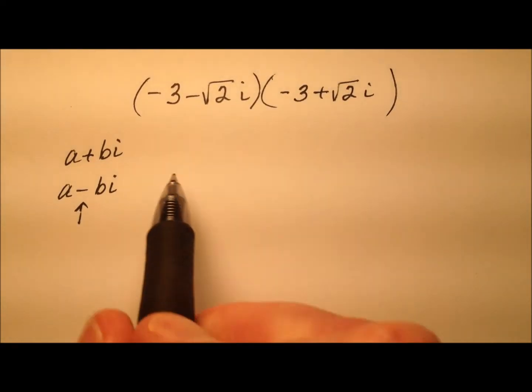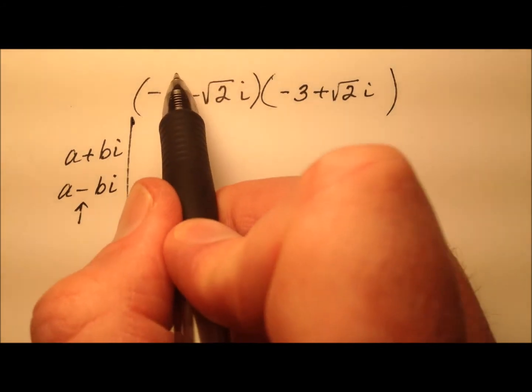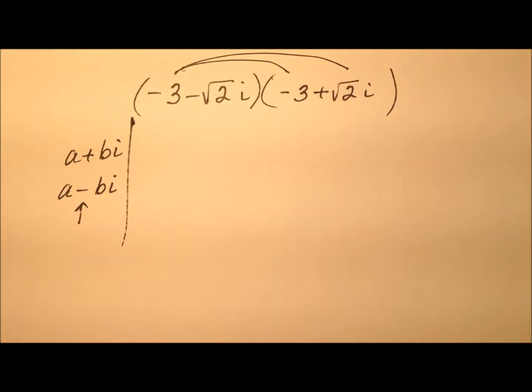So the negative 3, let's distribute. Negative 3 times negative 3 will be 9.